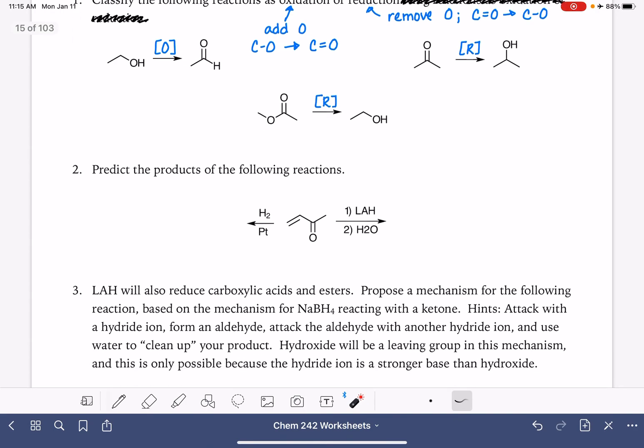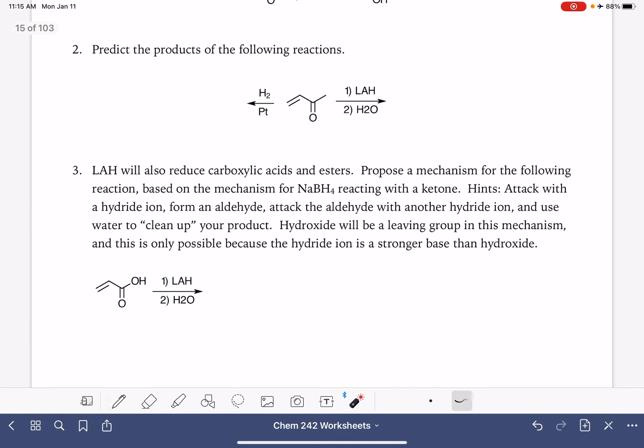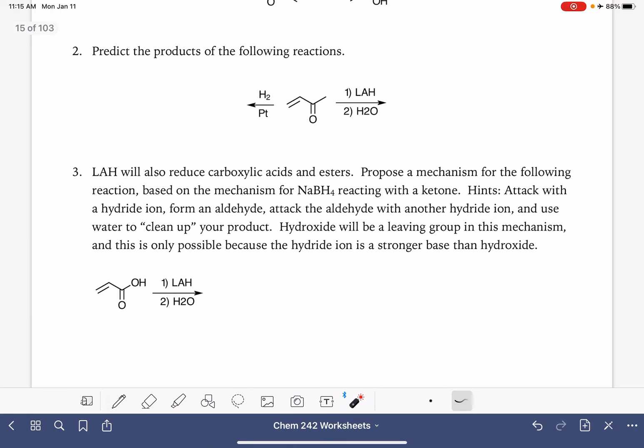Now let's take a look at a couple reactions that involve reduction to form an alcohol. We're going to be starting with this molecule right here, a ketone. It has a carbon-oxygen double bond. There are two different reagents that we could use to convert this carbon-oxygen double bond into a carbon-oxygen single bond or an alcohol.